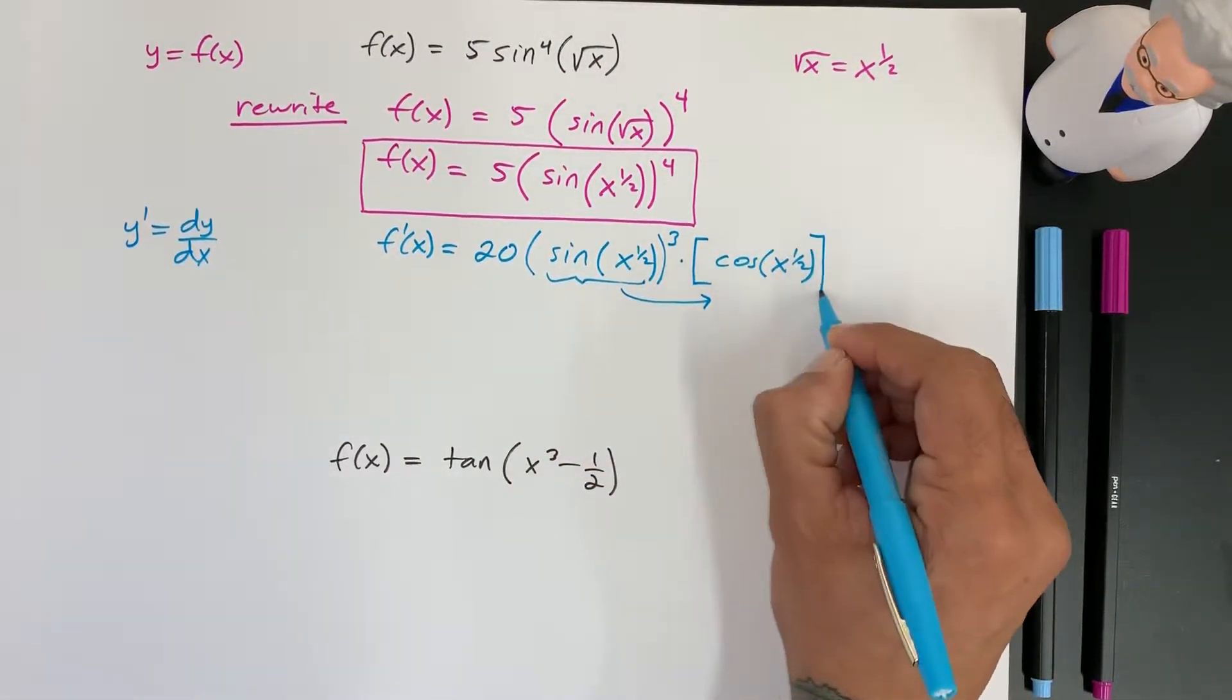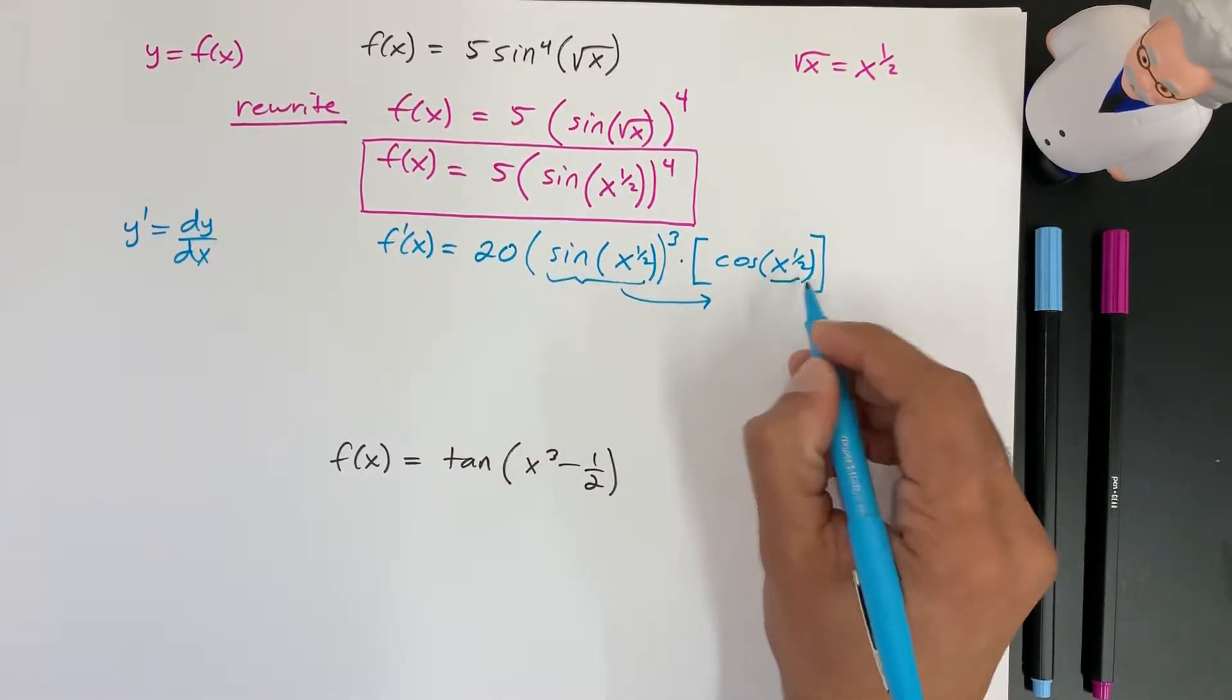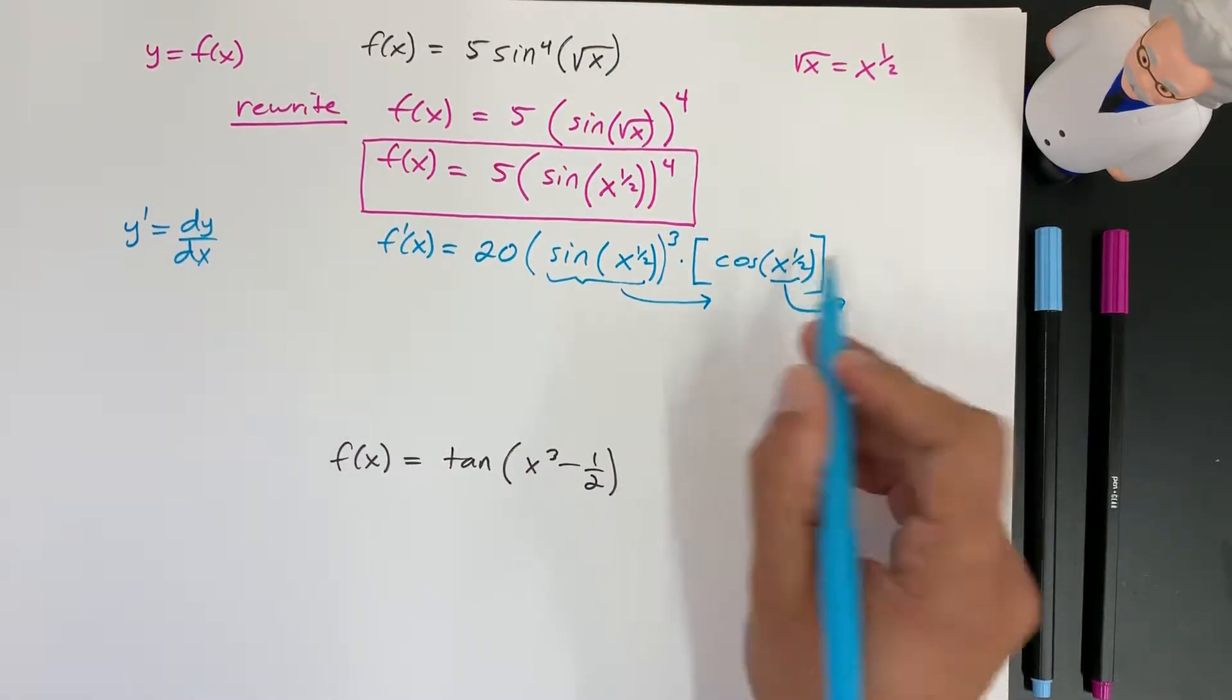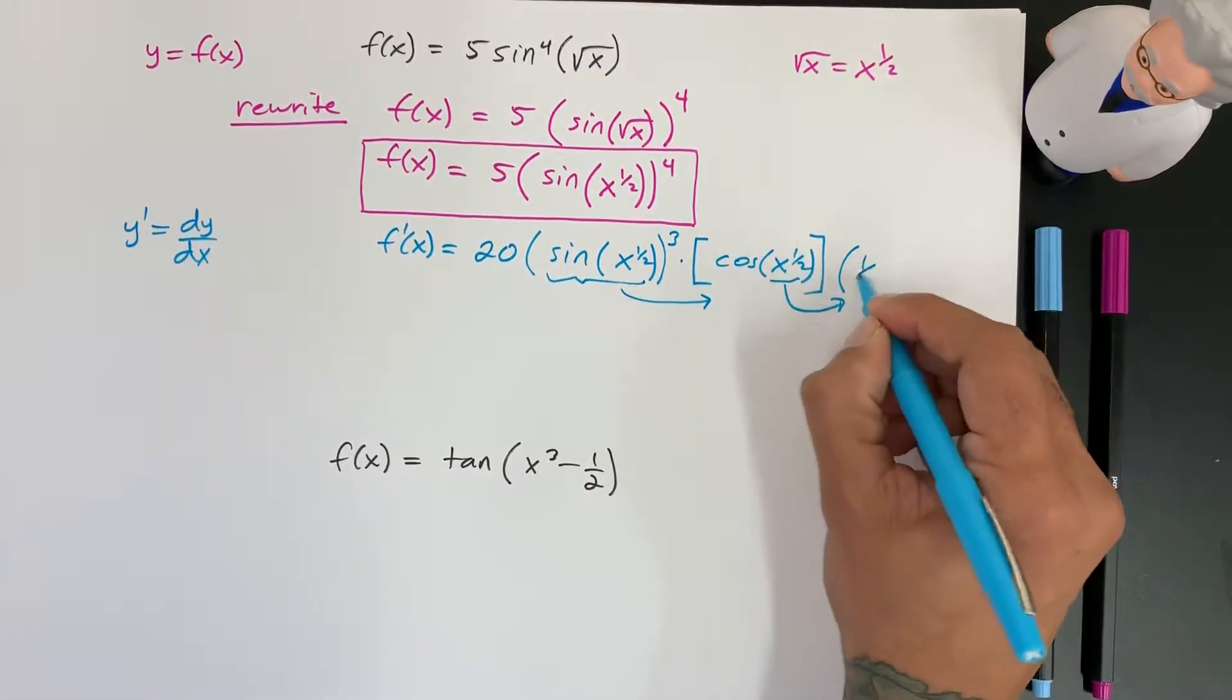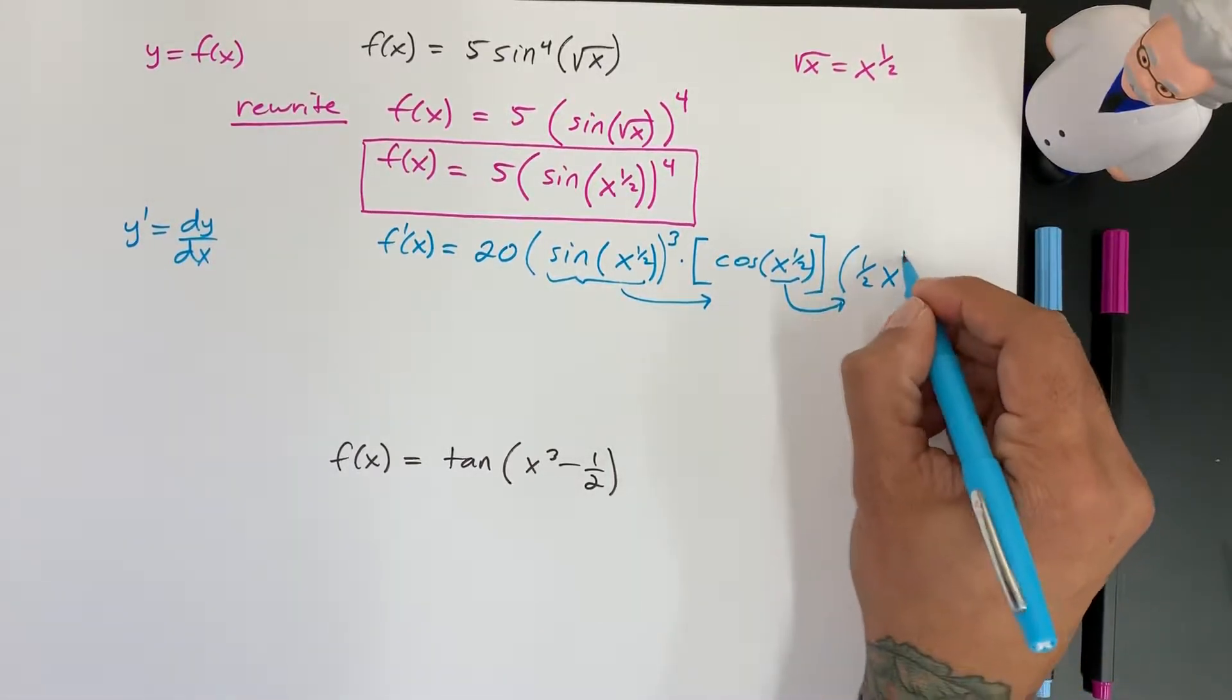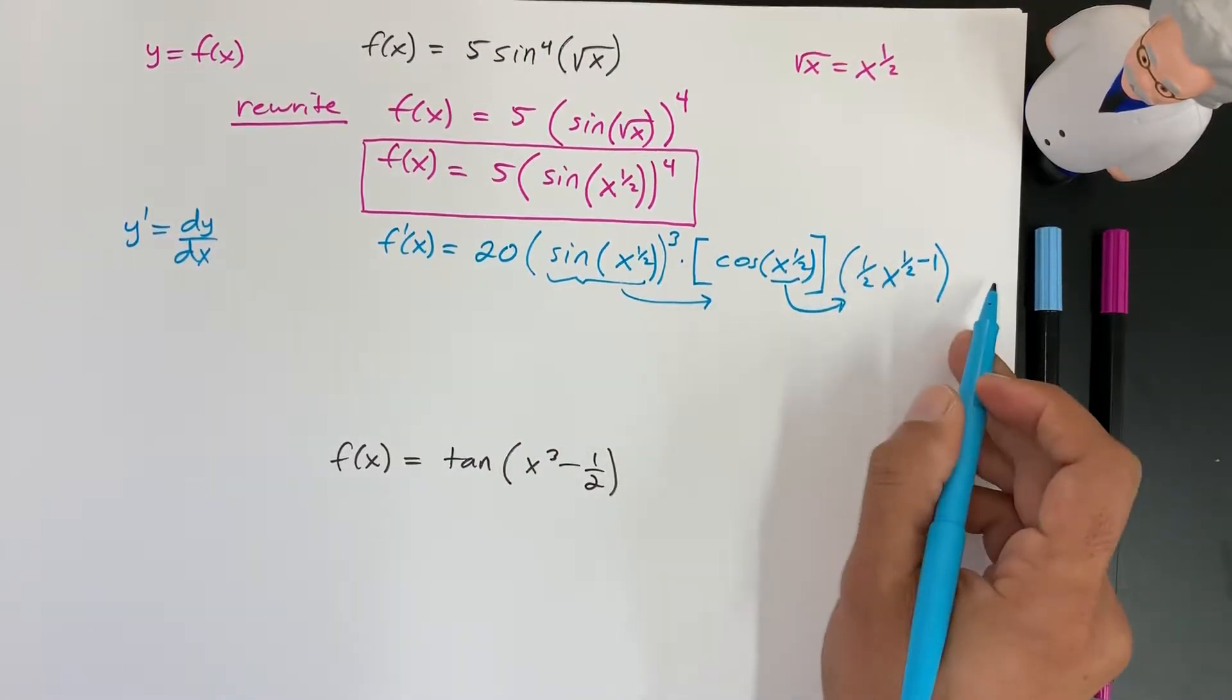Now that we did the derivative of sine, we have to do chain rule and do the derivative of the inside of cosine. And so now the derivative of this is going to be, you bring the 1/2 down, x, and on top you do 1/2 minus 1. And that's it. There's nothing else to do chain rule to.